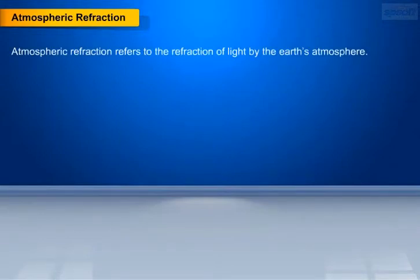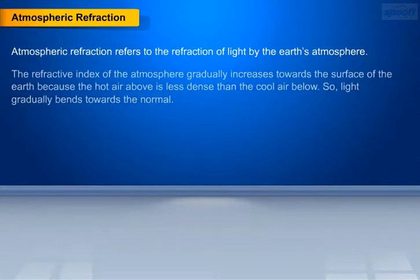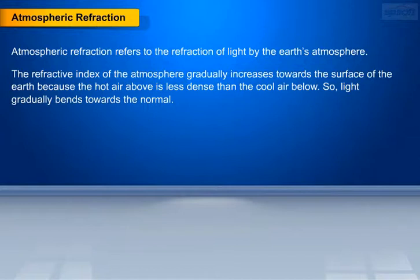Let us understand atmospheric refraction. Atmospheric refraction refers to the refraction of light by the earth's atmosphere. The refractive index of the atmosphere gradually increases towards the surface of the earth because the hot air above is less dense than the cool air below. So, light gradually bends towards the normal.